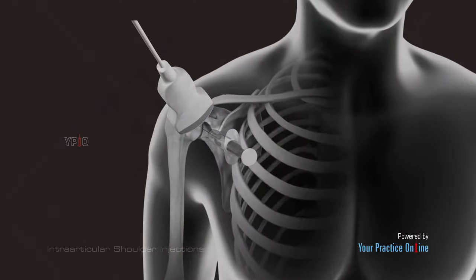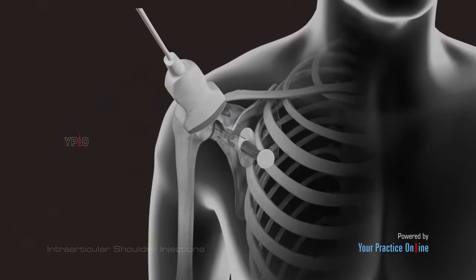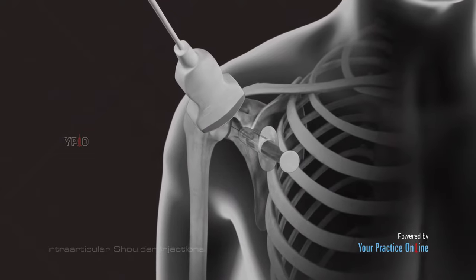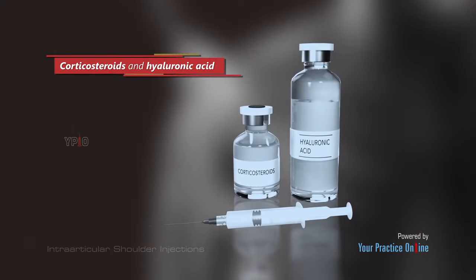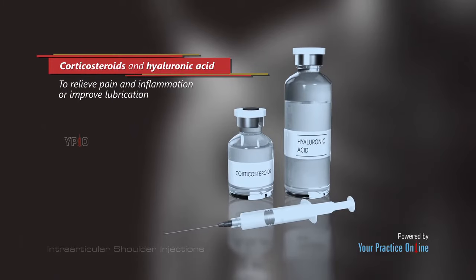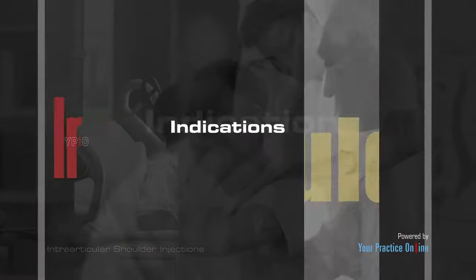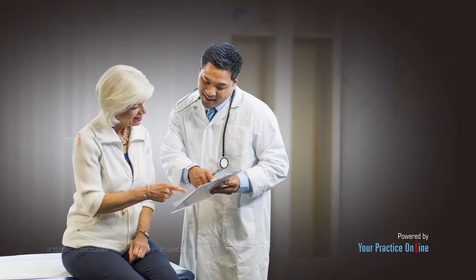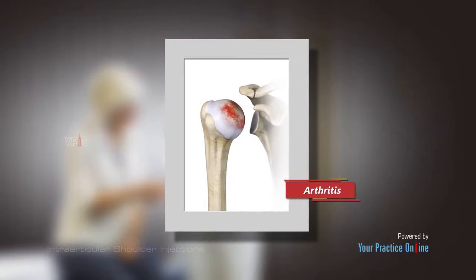Intra-articular shoulder injections are used for diagnostic as well as therapeutic purposes. Corticosteroids and hyaluronic acid are the most commonly injected medications to relieve pain and inflammation or improve lubrication in the joint.